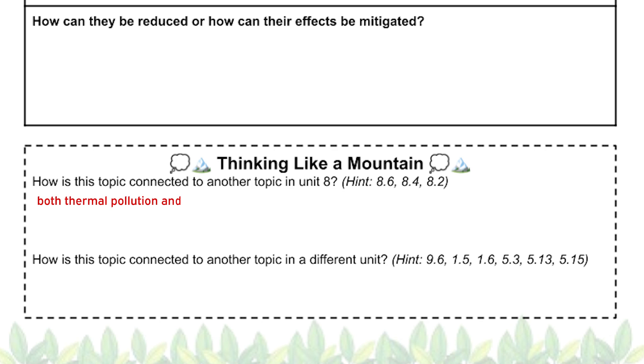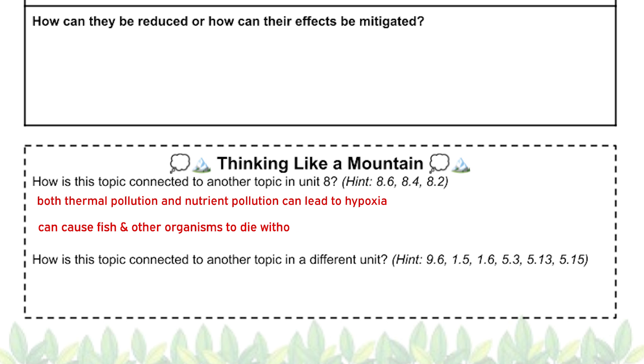Now that we've reviewed the key questions for eutrophication, let's practice making topic-to-topic connections within Unit 8 and to other units. One connection is to topic 8.6, thermal pollution. Both the nutrient pollution that leads to eutrophication and the heated wastewater or urban runoff that causes thermal pollution can ultimately result in hypoxia, or decreased oxygen levels in water, leading to fish kills and other organisms dying due to insufficient oxygen for respiration.